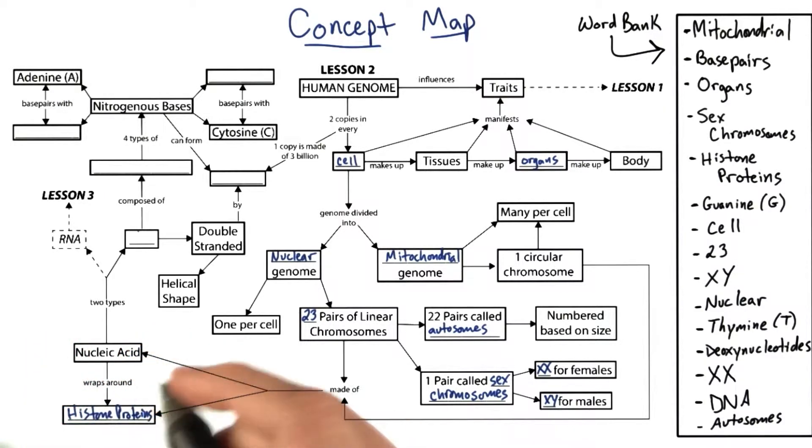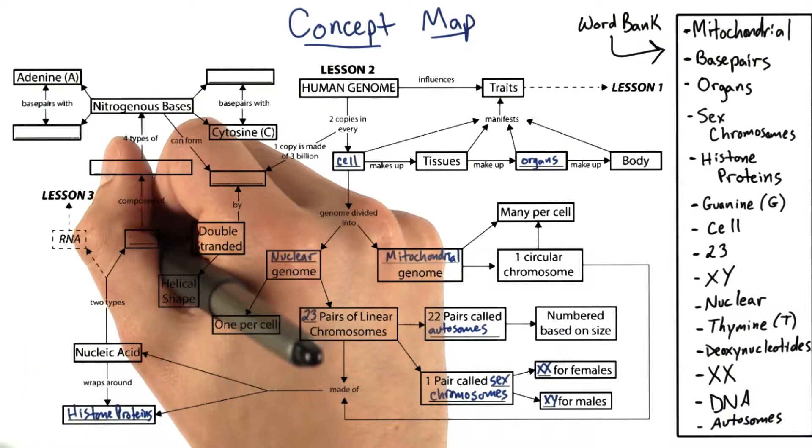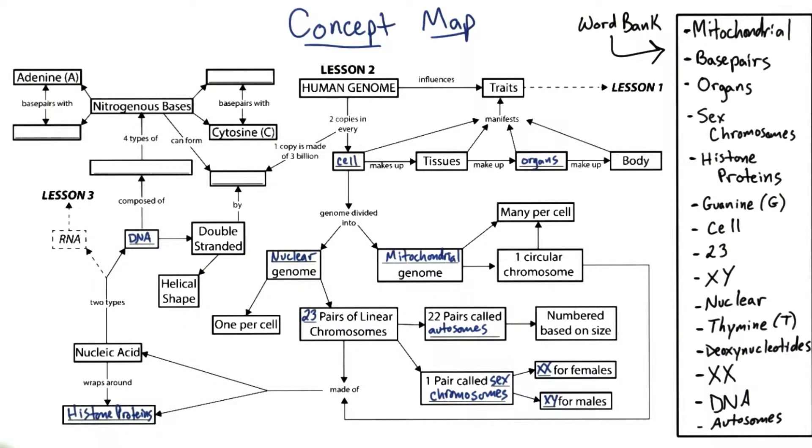Now there are two different types of nucleic acid. One of them, DNA, is what makes up chromosomes. The other type, RNA, we'll learn more about in lesson three.